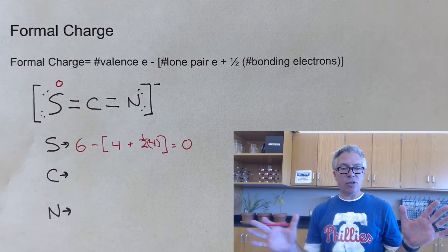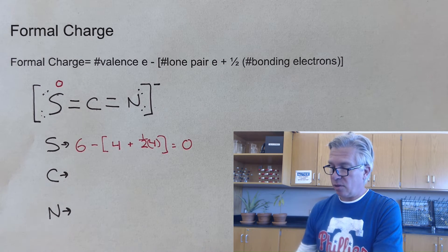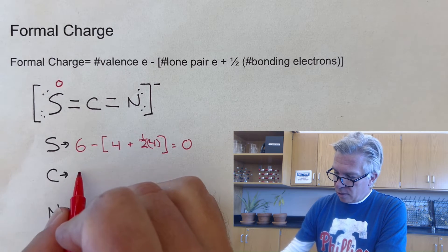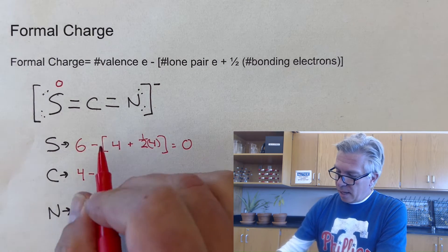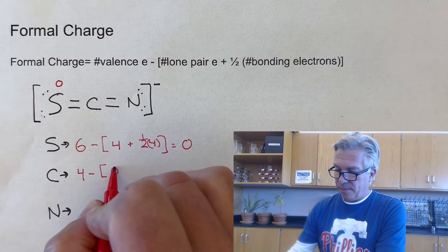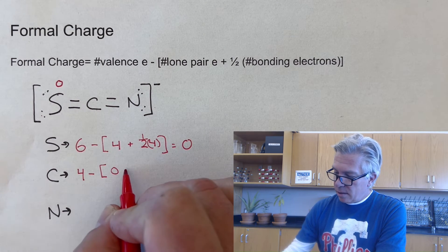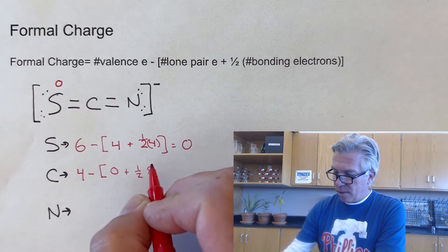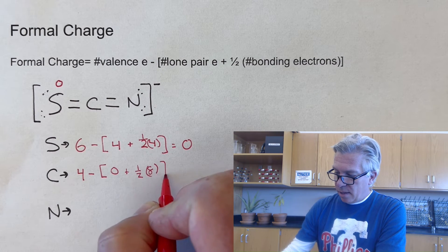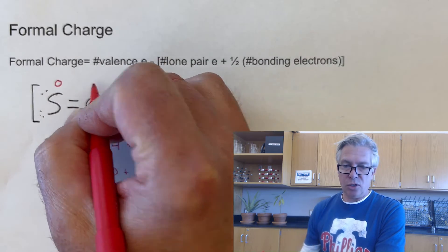So sulfur has no charge in this molecule. It's just hanging out with its six valence electrons. Carbon will start with four valence electrons. That's how it begins. And it's got zero lone pairs and one half of its eight bonding electrons. It's got four bonds for a total of eight. And that will also work out to a formal charge of zero.